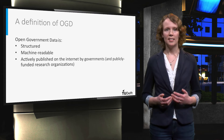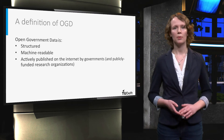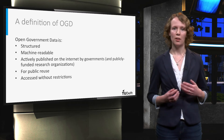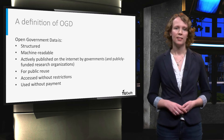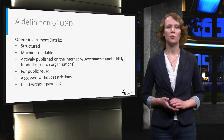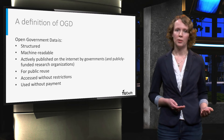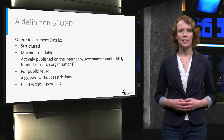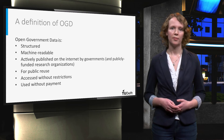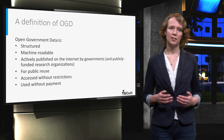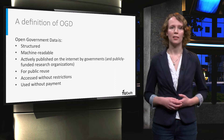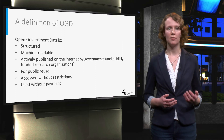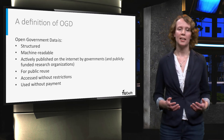Open government data is data that governments and publicly funded resource organizations actively publish on the internet. It is for public reuse, and the data can be accessed without restrictions and used without payment. This means that citizens do not need to request the data, but it is published by the initiative of the government. The data may also be collected by research organizations. Open government data is ideally accessible without restrictions; however, in practice there may be restrictions, such as licenses or user-unfriendly infrastructures to access the data. It is not about the publication of personal, sensitive, or secret data, but about the publication of data that is applicable for opening.